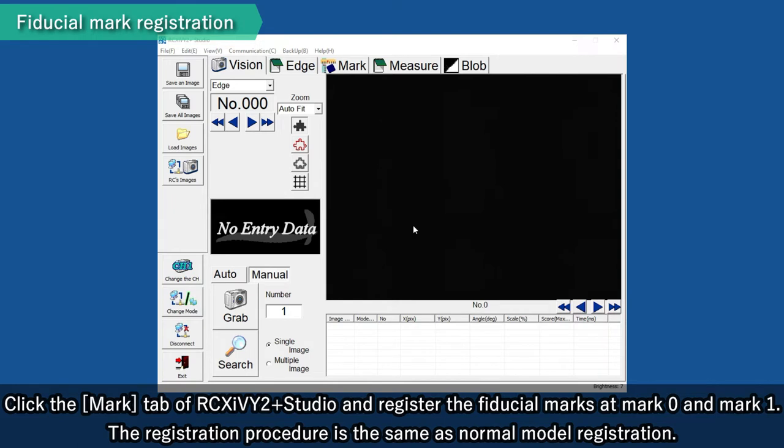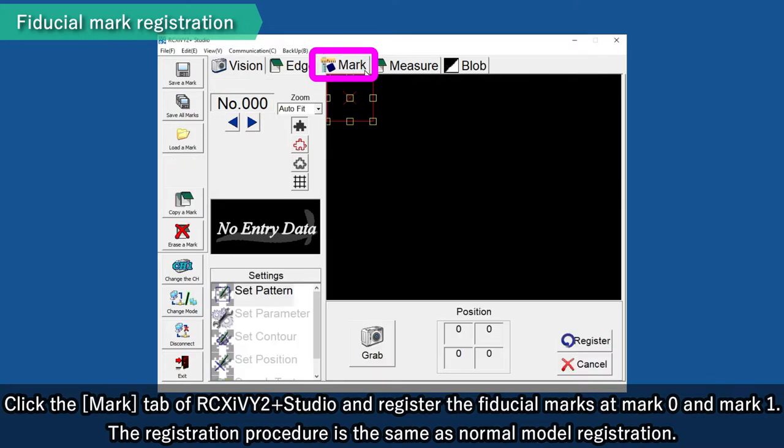Click the mark tab of RCX-IV2+ Studio and register the fiducial marks at mark 0 and mark 1. The registration procedure is the same as normal model registration.